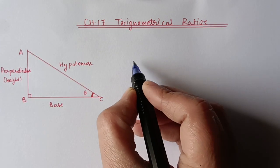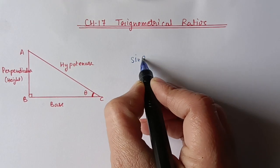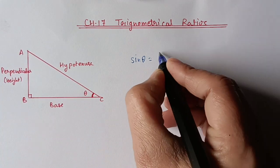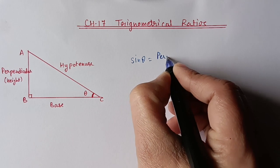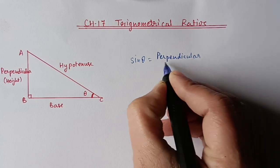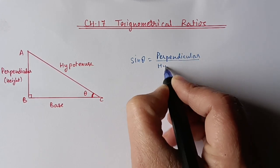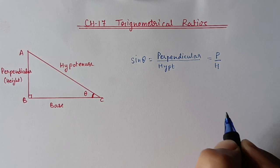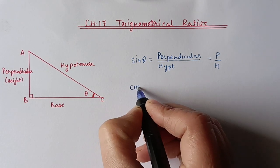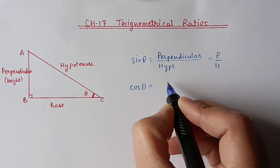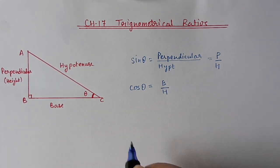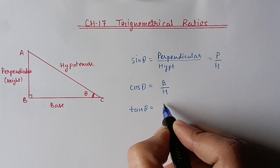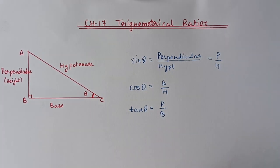Now we have some trigonometrical ratios — the ratio of these three sides in different ways. First we have sine theta. Sine theta is the ratio of height and hypotenuse, so perpendicular upon hypotenuse — I will denote perpendicular with P and hypotenuse with H. Next ratio we have is cos theta: cos theta is the ratio of base and hypotenuse. Third ratio we have is tan theta: tan theta is the ratio of perpendicular by base.